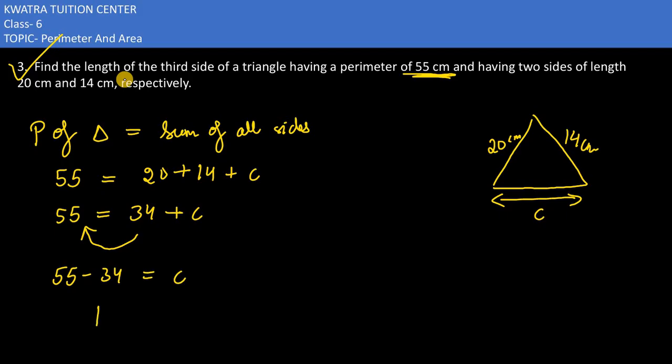You would get c as 21 cm. The third side of the triangle would be 21 cm.